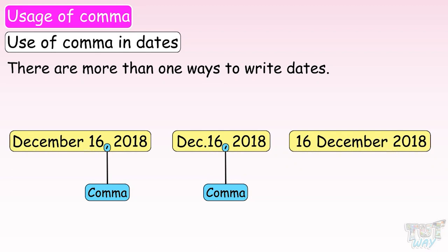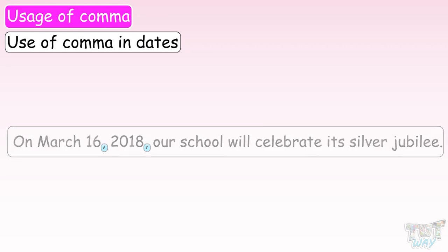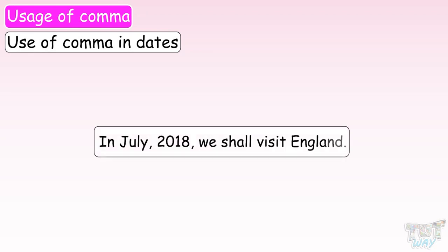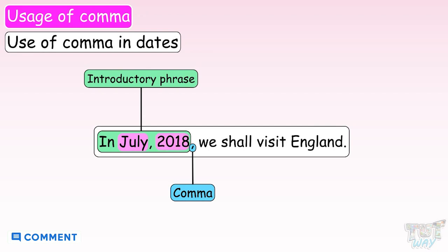Here we have some example sentences in which dates are written. On March 16, 2018, our school will celebrate its Silver Jubilee — here we have used a comma after the date to separate it from the year. In July 2018, we shall visit England — here 'In July 2018' is an introductory phrase separated using a comma, and the month and year are also separated using a comma.